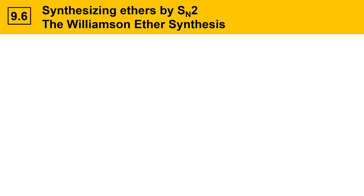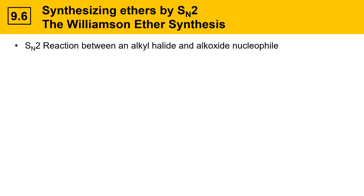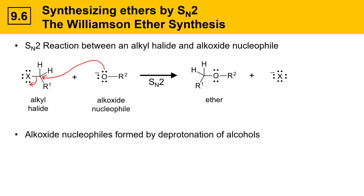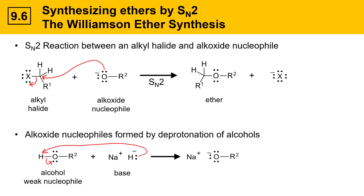This slide goes into more depth on the Williamson ether synthesis, an SN2 reaction between an alkyl halide and an alkoxide nucleophile. The alkyl halide should be relatively unhindered. The nucleophile attacks the alkyl halide, displaces the halogen, and gives an ether product. Alkoxide nucleophiles are formed by deprotonating an alcohol. If you have an alcohol and add a base like sodium hydride, the base deprotonates the alcohol to generate an alkoxide — a strong nucleophile — and hydrogen gas as a byproduct. Sometimes Williamson ether synthesis questions come in two parts: making the nucleophile and then doing the SN2 reaction.